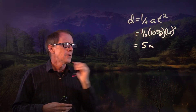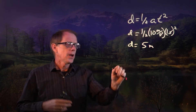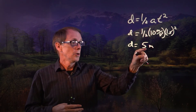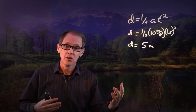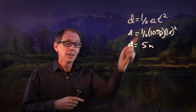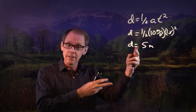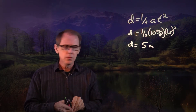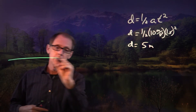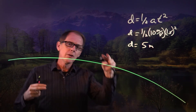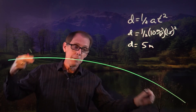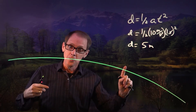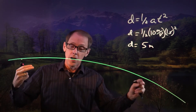So this equation tells us that an object falling due to gravity, in the absence of air resistance, after one second, will fall five meters. Let's put this equation — our guide to thinking — to some actual use. For example, let's draw Earth. You might know that Earth is round, and because it's round, it has this curvature. But you might not know what exactly the dimensions are of that curvature.